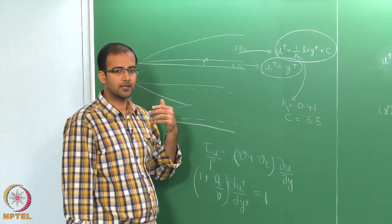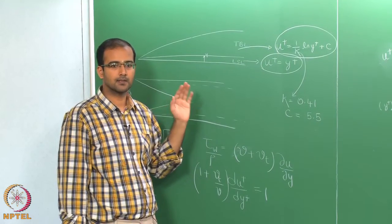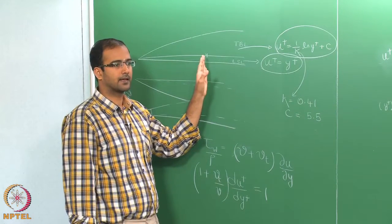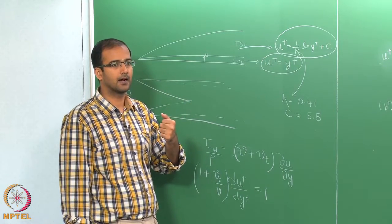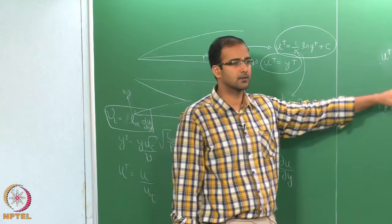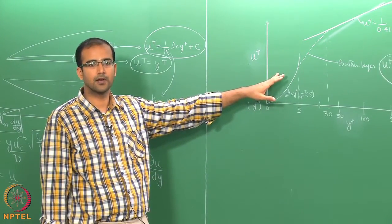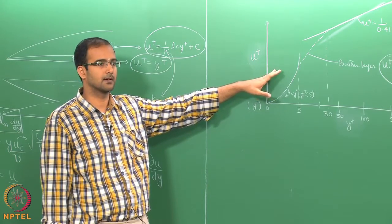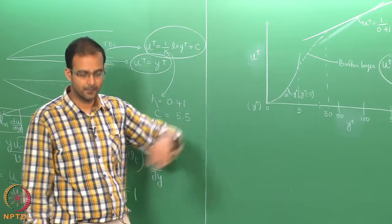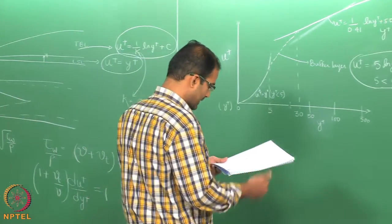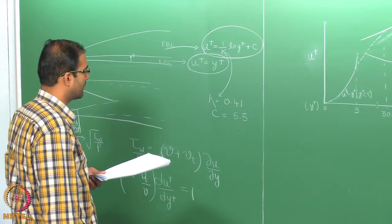This profile is derived for the case of a flat plate boundary layer with no adverse pressure gradients. If you have favorable or adverse pressure gradients, those will change the nature of these profiles, and you would need to do experiments to find out how they vary. This is the basic idea about the variation of velocity profiles.